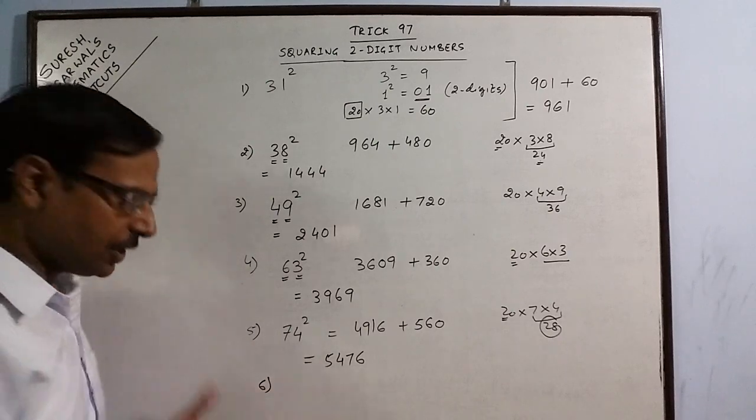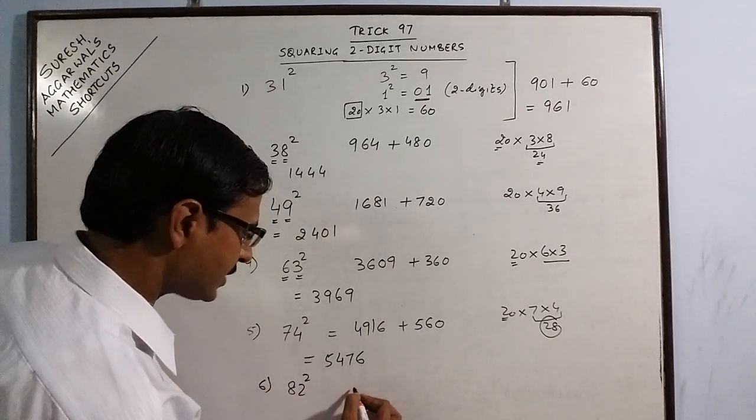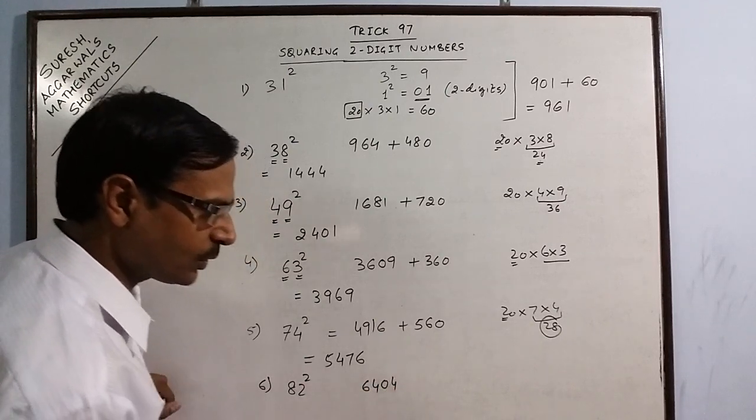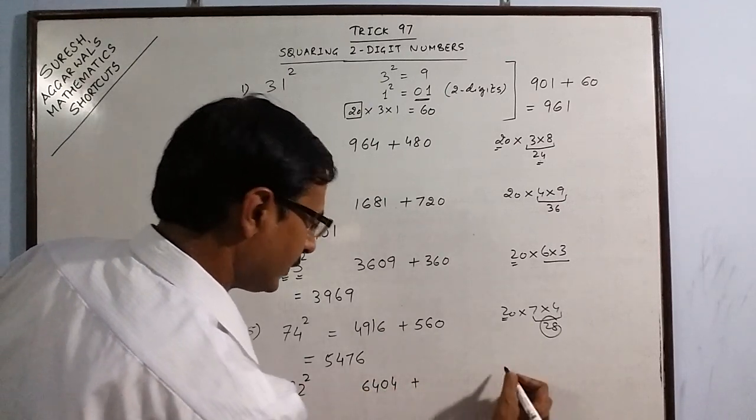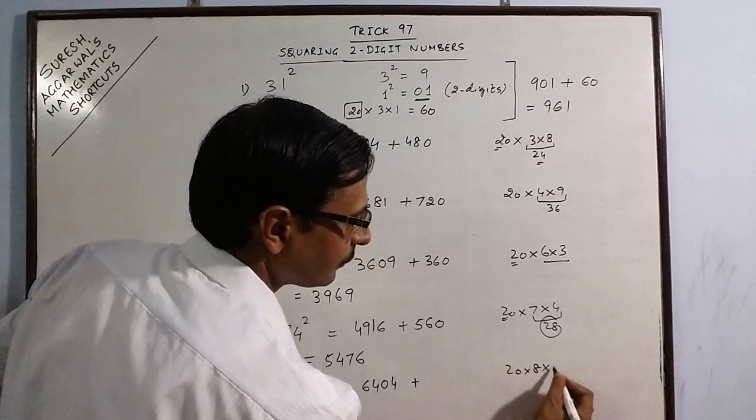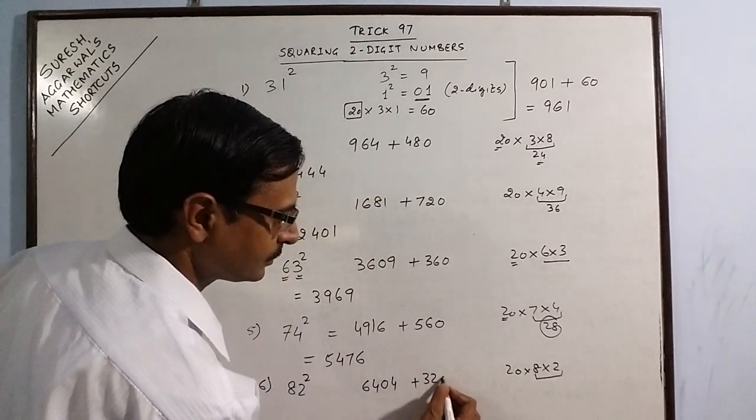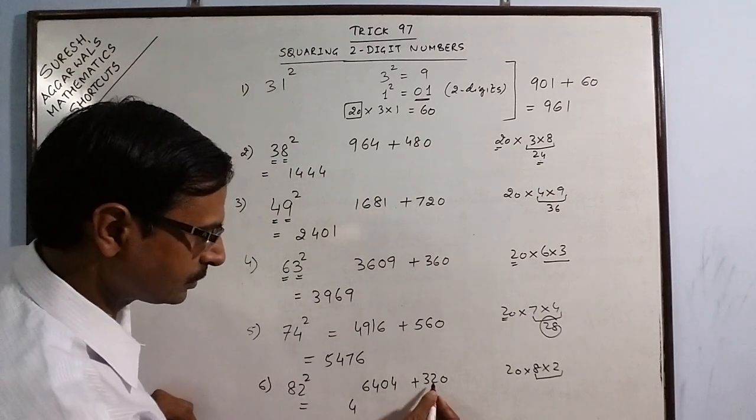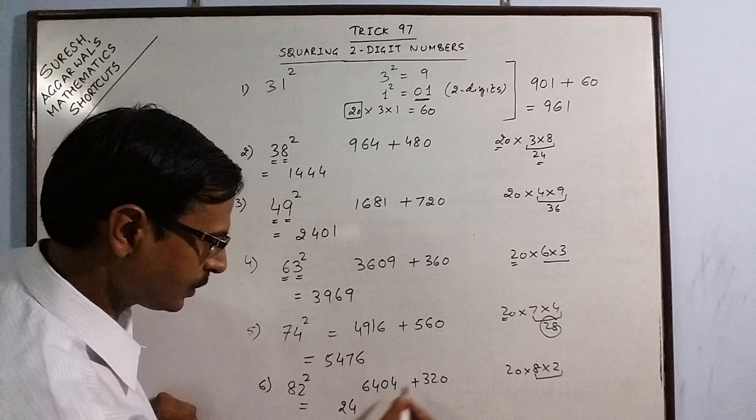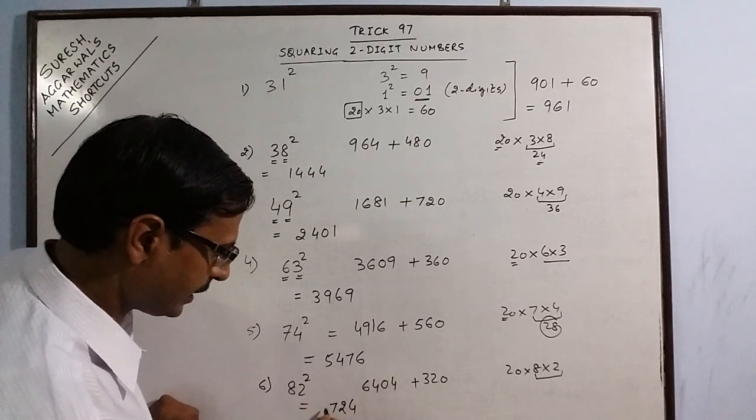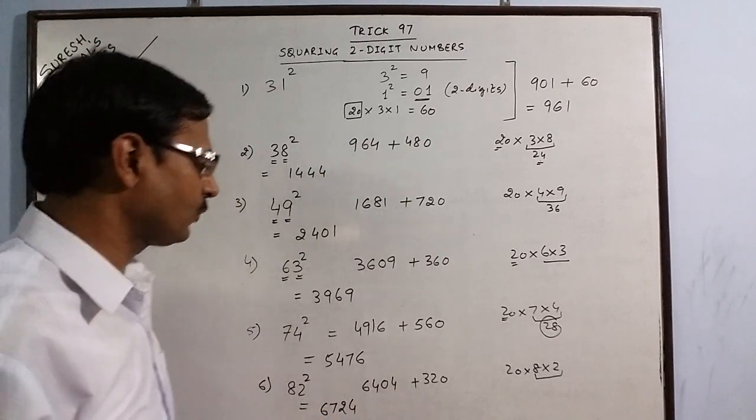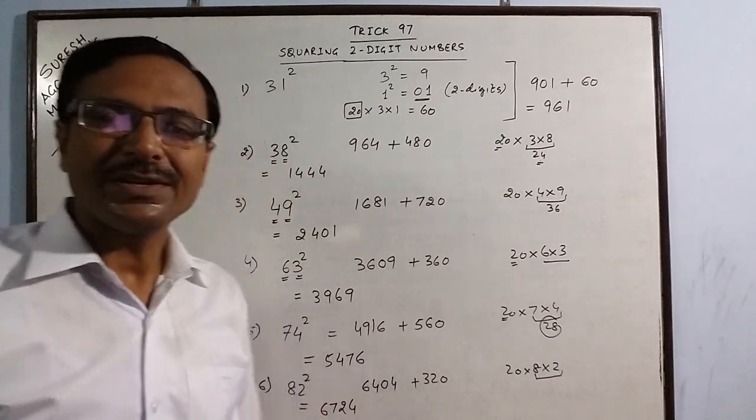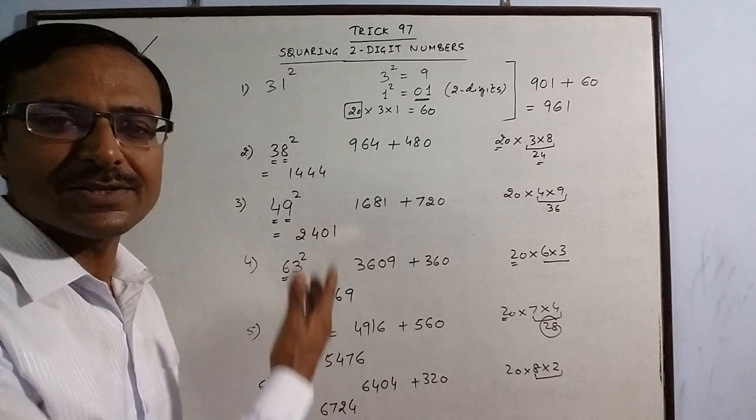More examples: say we have 82. 8 square is 64, 2 square is 4 - need to put a 0. Then add 20 times 8 into 2: 8 into 2 is 16, double is 32. So your answer is 6724, which is the square of 82.